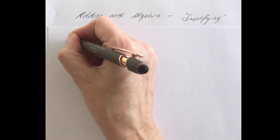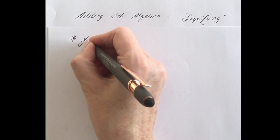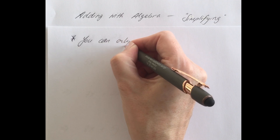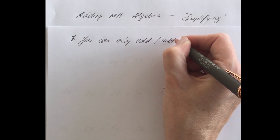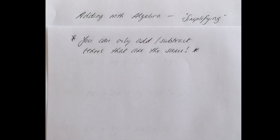In this video we're going to look at adding with algebra, and that includes adding and subtracting with algebra. Another word they often use here is 'simplify' — when you're simplifying algebra you are basically adding and subtracting terms together. The biggest thing to remember is you can only add or subtract together terms that are the same. Stick to that and the rest becomes quite straightforward.